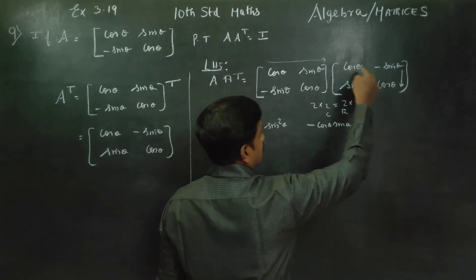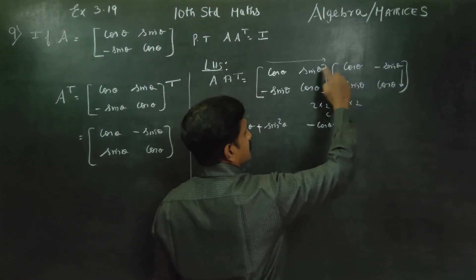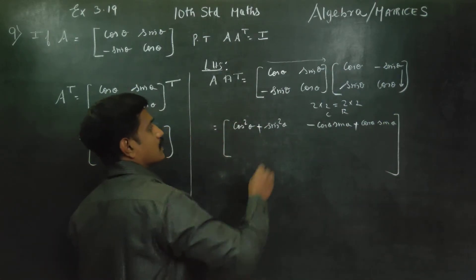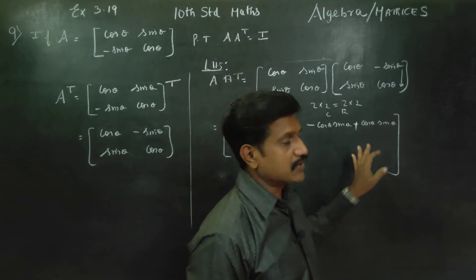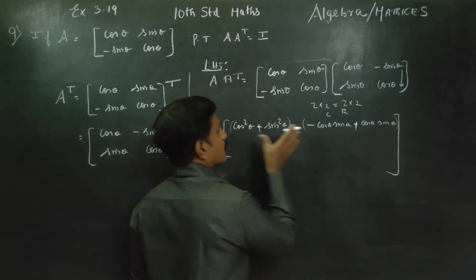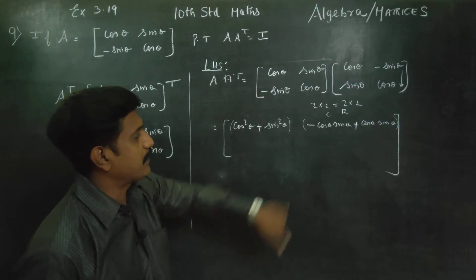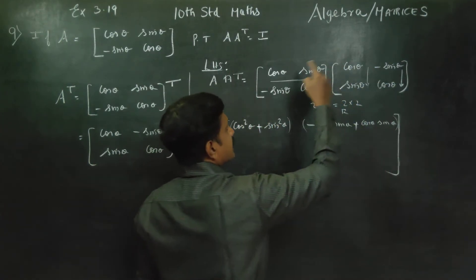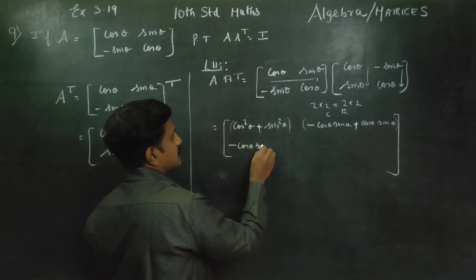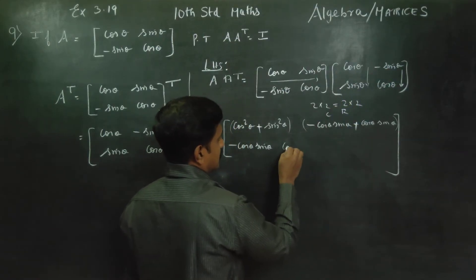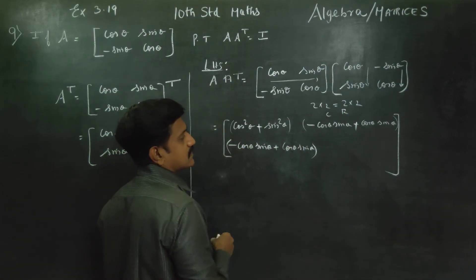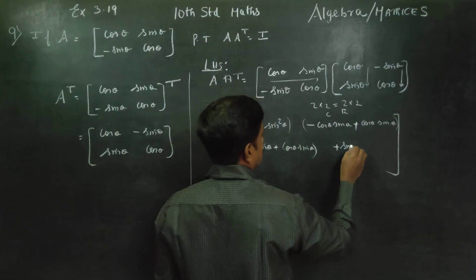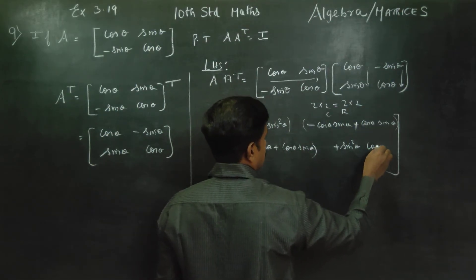For the second row, first column: minus sin theta into cos theta, minus cos theta sin theta, plus cos theta sin theta — these cancel to give 0. For the second row, second column: minus sin theta into minus sin theta gives plus sin square theta, plus cos theta into cos theta gives cos square theta.